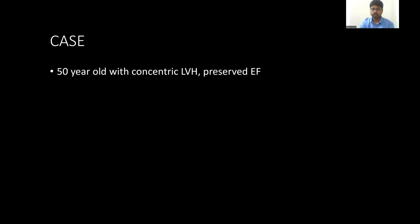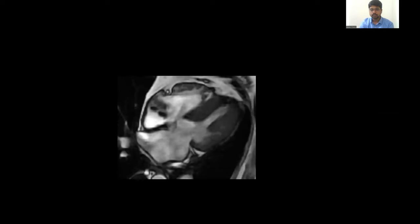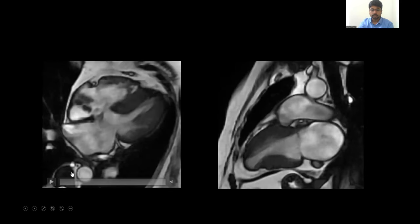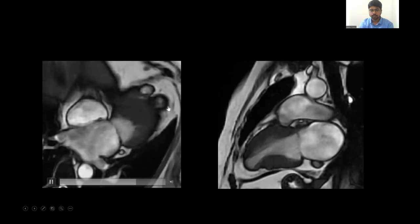Let's see a case example. A 50-year-old male with concentric LV hypertrophy and preserved ejection fraction on echocardiography. Here are the short axis views at multiple levels — basal, mid, and apical — showing asymmetrical thickening of the septum more than 15 mm, establishing a diagnosis of HCM. It is a concentric type of HCM as seen in this four-chamber view. The right ventricle is also mildly thickened, and there is an incidentally detected right atrial lesion. Cine-loop four-chamber views show cavity obliteration of the mid and apical cavity with apical ballooning.